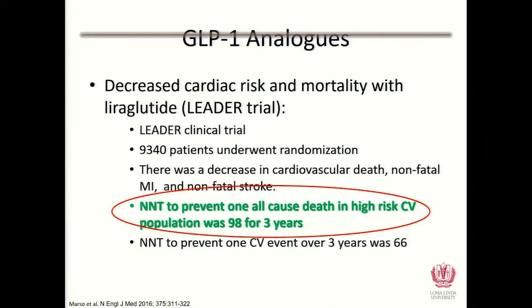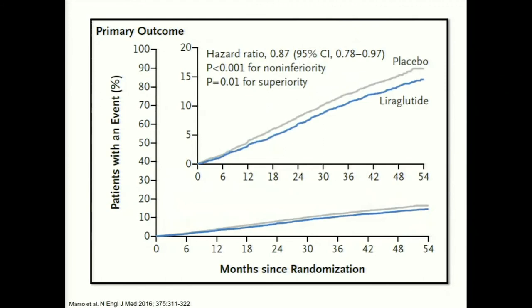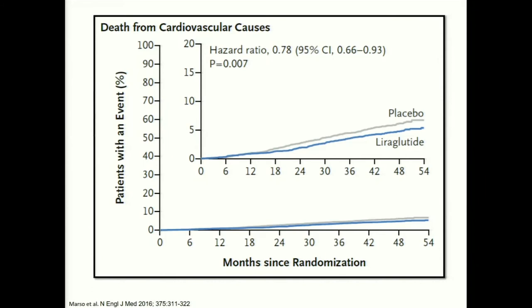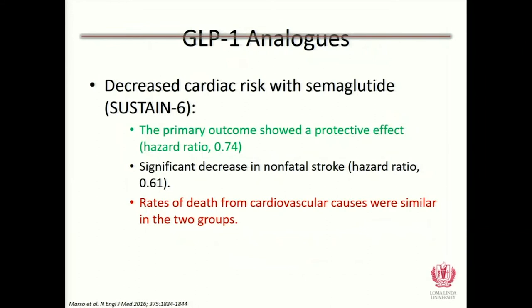For cardiovascular risk with GLP-1s, the LEADER trial with liraglutide showed a number needed to treat over three years of 98 — not as strong as empagliflozin's 38, but still significant. Looking at the outcome curves, you don't see the significant divergence until about 18 months — very different from the SGLT2 inhibitors, where it was 3 months. This matters clinically: if a patient is very high risk right after hospitalization, SGLT2 inhibitors may be the better immediate choice, with GLP-1 added later.